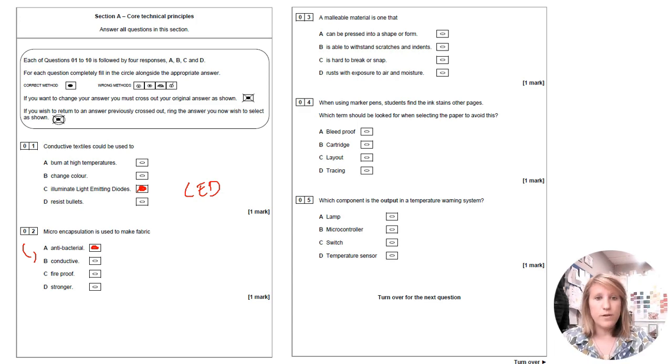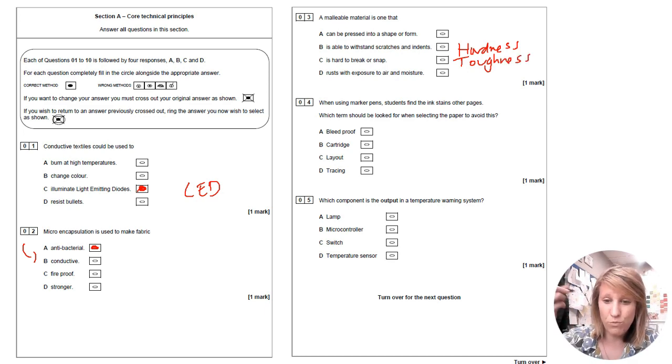A malleable material is one that a can be pressed into a shape or form is able to withstand scratches and indents. That's hardness. So it's not that one is hard to break or snap. That's toughness. So it's not that one rust with exposure to air and moisture. This is almost a repeated question from one that was earlier. That one's like corrosion resistant or whatever or not not corrosion resistant, but it's it's a. So something that's malleable can be like hammered and squashed into a shape like copper or gold or silver, something like that.